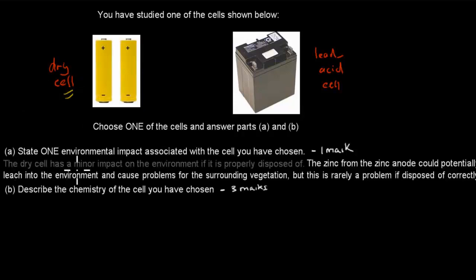So A, state one environmental impact associated with the cell you've chosen, the dry cell you've chosen. So one environmental impact. So what I wrote is the dry cell has a minor impact on the environment if it's properly disposed of. So it has a minor impact, especially if it's properly disposed of. And what I mean by that is it's put into the garbage as it should be. And then now here's a possible problem it could have. The zinc from the zinc anode could potentially, the word potentially means that it might, potentially leach, which means it goes into the environment, leach into the environment and cause problems for surrounding vegetations. Vegetations are plants. So it could cause problems for plants if it leaches into the environment.